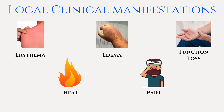Five of the local clinical manifestations were already discussed in Part 1 of the series, as they are considered the cardinal signs of inflammation. But I will do a quick review now.